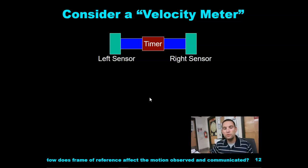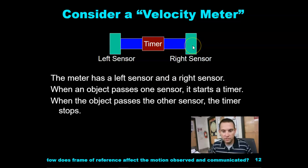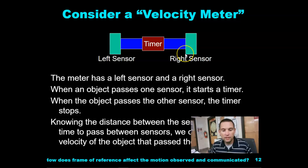So we have a velocity meter. A velocity meter measures velocity. It's important to know the tools that we use. We've got a sensor on the left, a sensor on the right. When an object goes through one sensor, it's going to start this timer, and then when it goes through the next sensor, it's going to stop the timer.